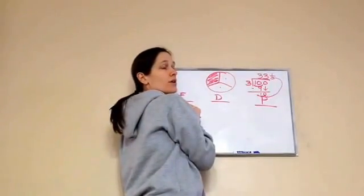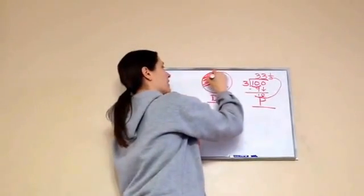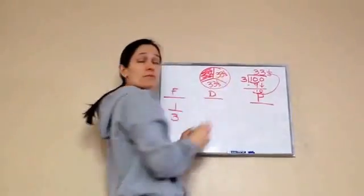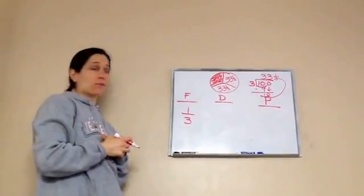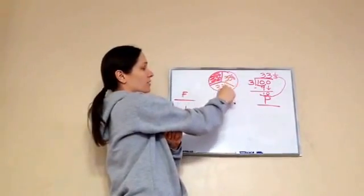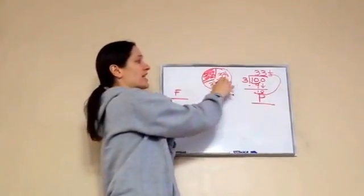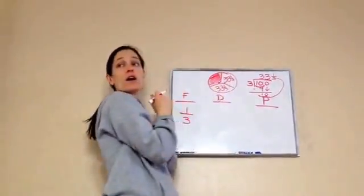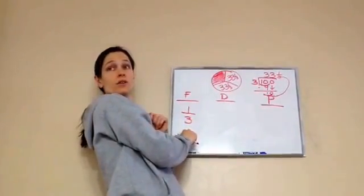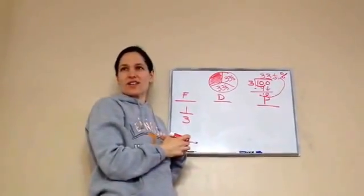So how much is each section worth? 33 and a third. This section is 33 and a third, this one is 33 and a third, and this one is 33 and a third. Will that equal 100? Yes — because 33 plus 33 plus 33 equals 99, and one-third plus one-third plus one-third makes three-thirds, which is one whole, making 100.